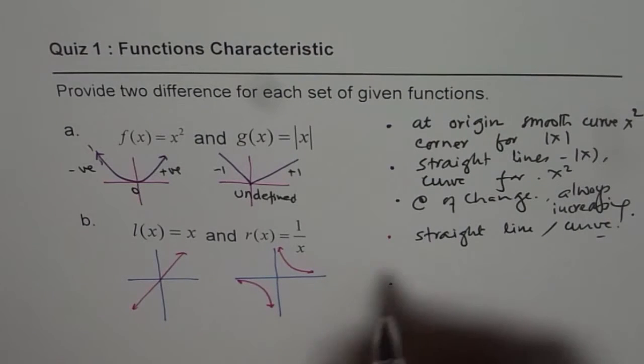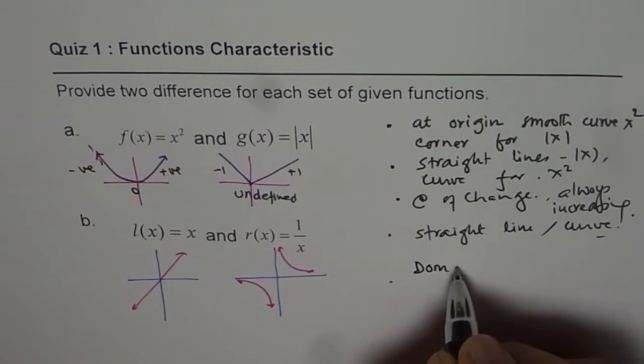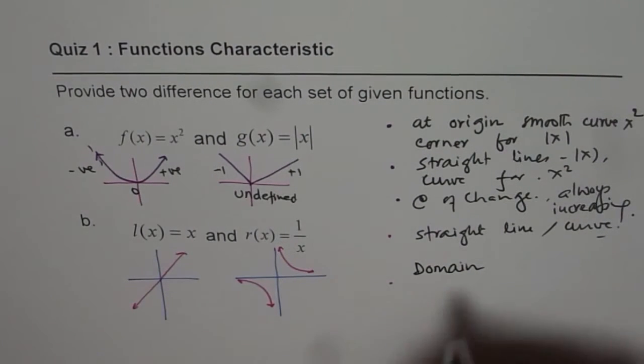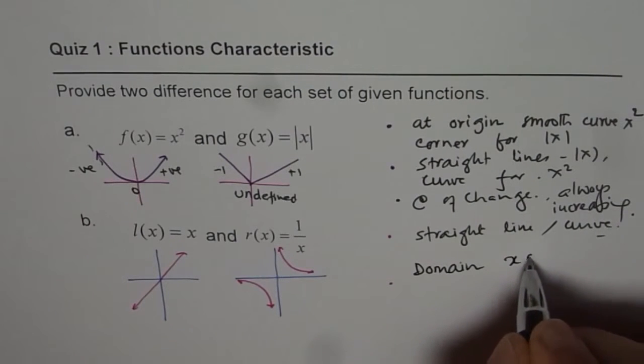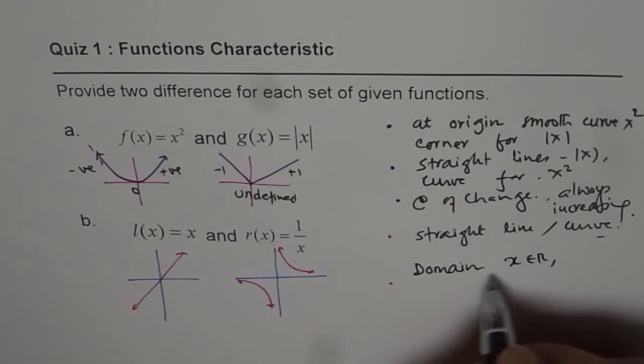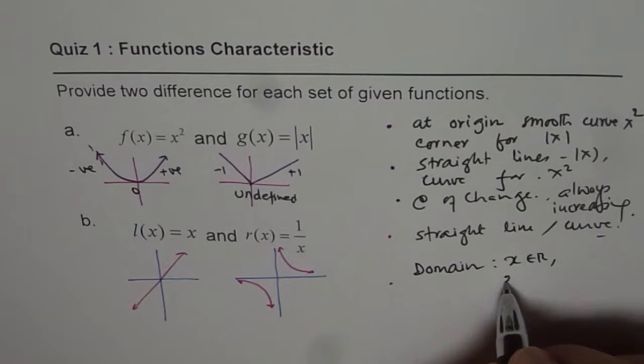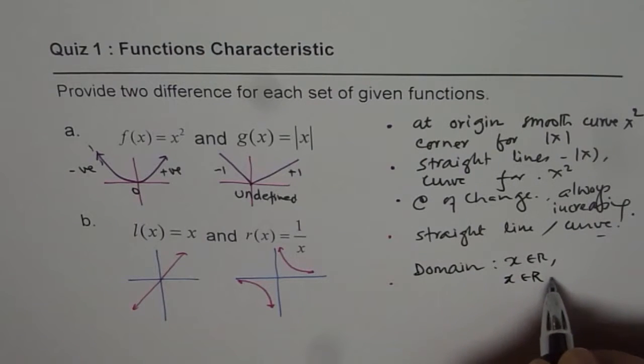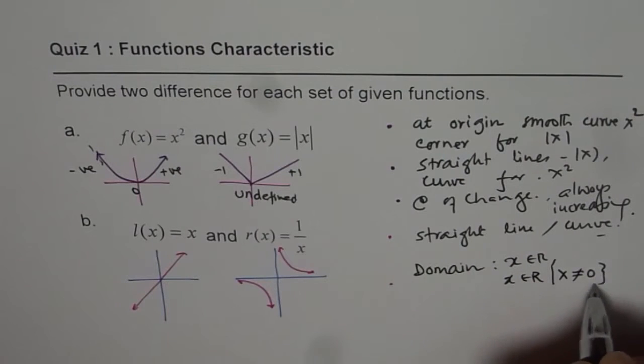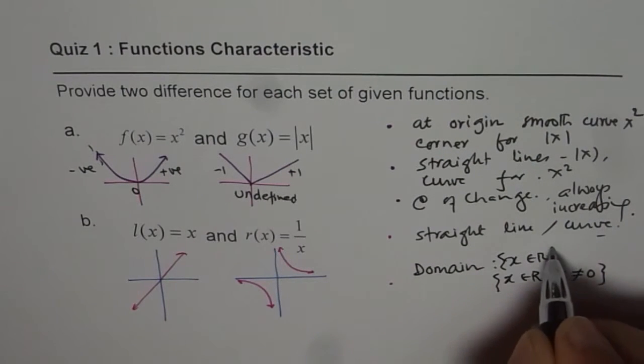The other is restriction on domain. So you can say domain is different. Domain is x belongs to real numbers. And in the other case, it is x belongs to real numbers, but x is not equal to zero. So origin is not part of domain.